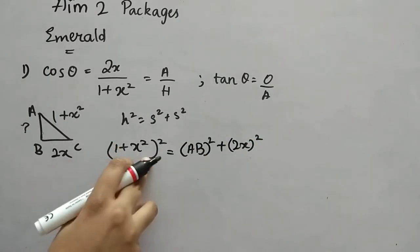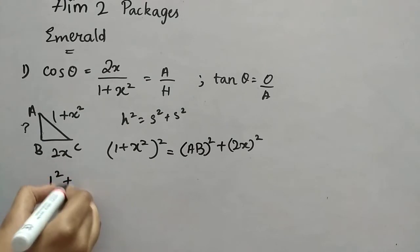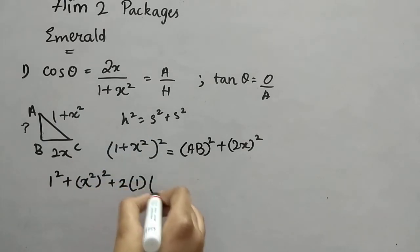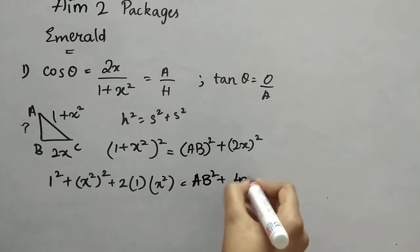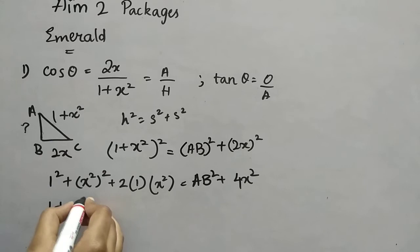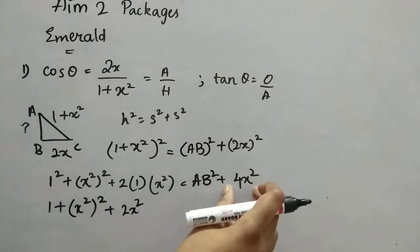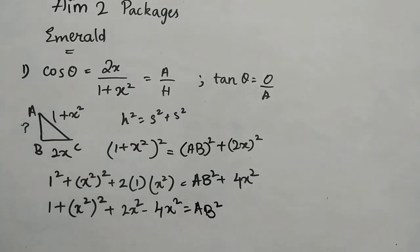This is like (A + B)² expanded: 1 + x⁴ + 2x², giving AB² = 1 + x⁴ + 2x² − 4x². Simplifying, 2x² − 4x² = −2x², so AB² = 1 − 2x² + x⁴, which we can write as (1 − x²)². Therefore AB = 1 − x².